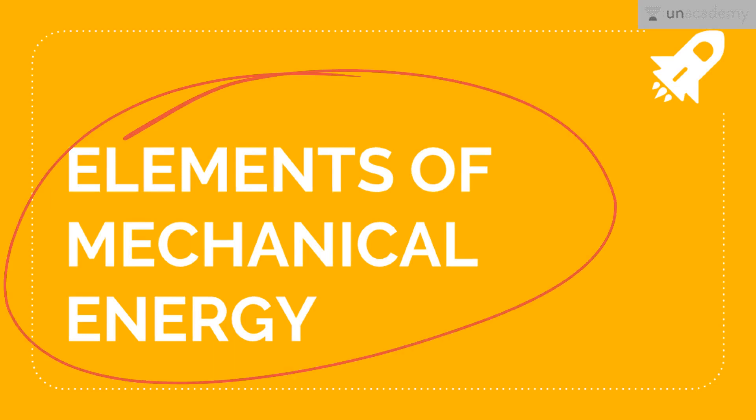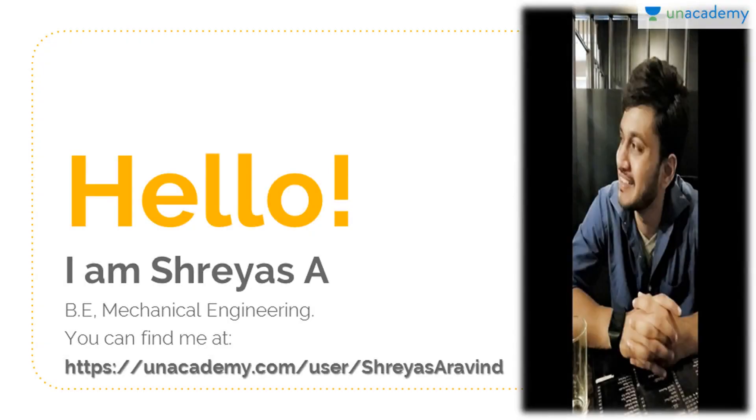Let's start with our course, the elements of mechanical engineering. My name is Shreyasaya. I am a BE mechanical engineering student. You can find me at the Unacademy user platform mentioned here. Solar power is the course we will be doing today.